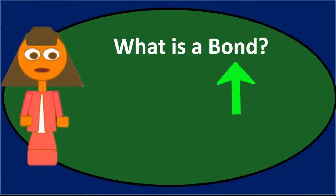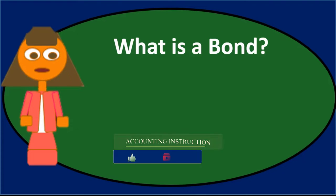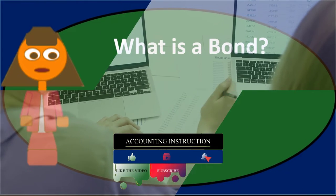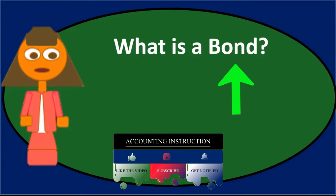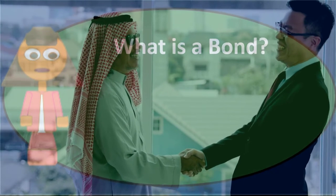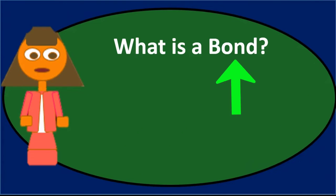When considering the topic of bonds, this is probably one of the broadest types of questions that could be given in an essay or discussion question format. One approach is to first define the bond, then cover some characteristics, and then possibly talk about how a bond might be recorded. A bond is a written promise to pay the par value or face amount of the bond plus any stated interest.